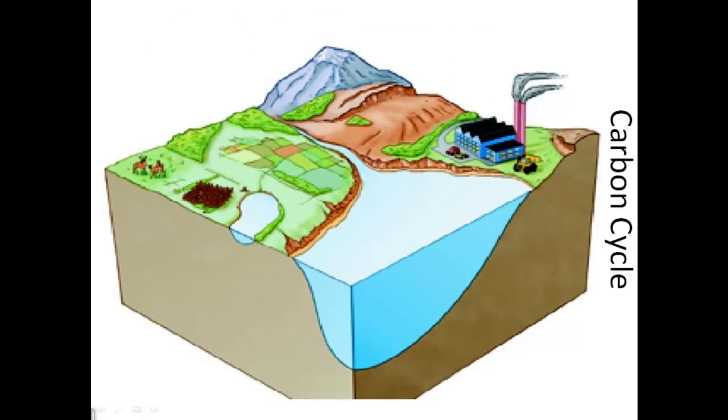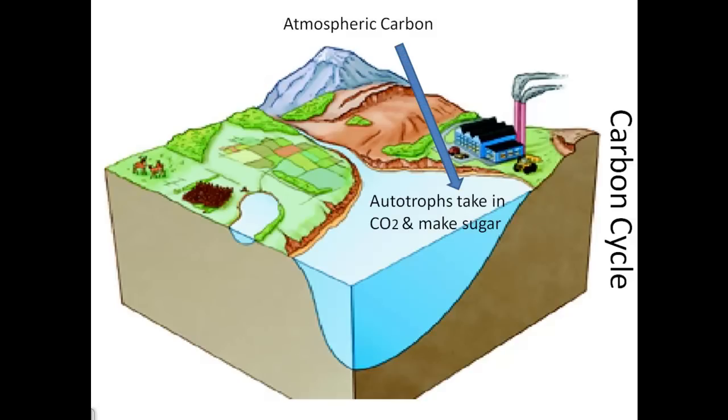Next, we have the carbon cycle. It is important because plants and other autotrophs take carbon dioxide from the atmosphere and make sugar through photosynthesis. So, we have the atmospheric carbon going down to the autotrophs through photosynthesis.